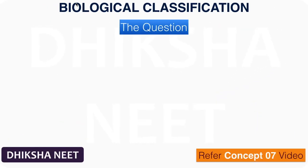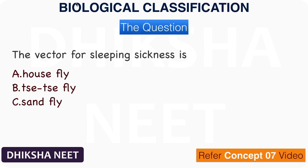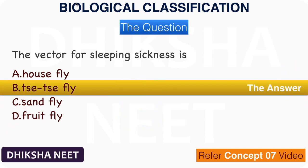The question: The vector for sleeping sickness is — A. Housefly, B. Tsetse fly, C. Sandfly, D. Fruit fly. The answer is option B. Tsetse fly.